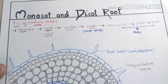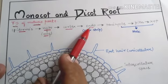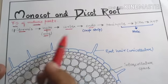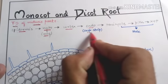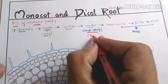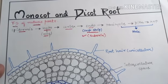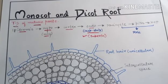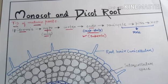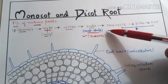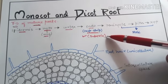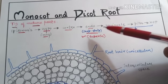The cortex has layers: hypodermis and endodermis. The lowermost layer of cortex is endodermis. There is a special property about endodermis — they are covered with Casparian strips, which are made up of suberin. This is a very important question. These strips, known as Casparian strips, are made up of suberin, which is a water-repelling substance. So endodermis, the innermost layer of cortex, does not allow water to pass because it has Casparian strips.